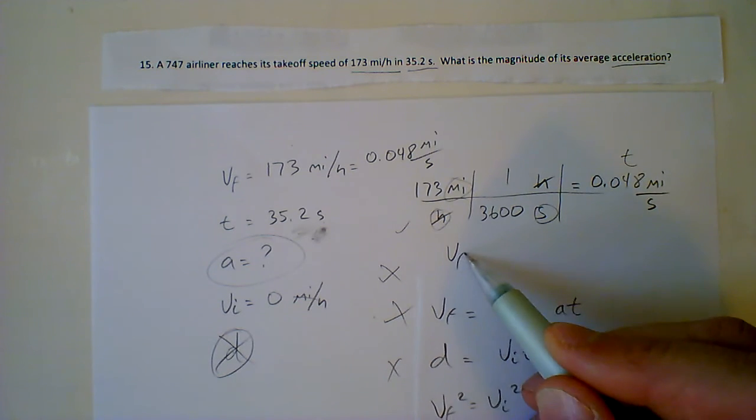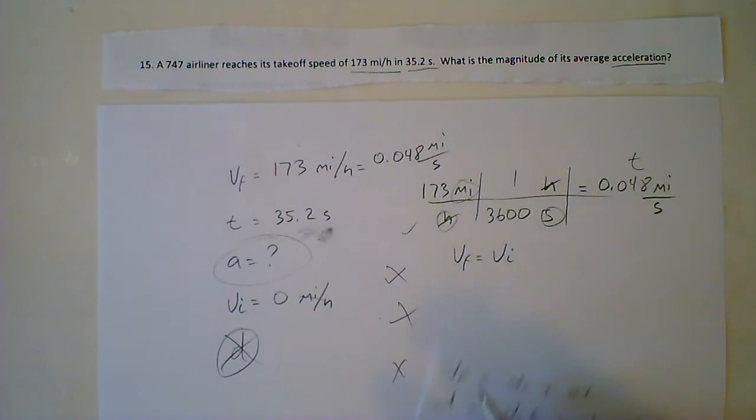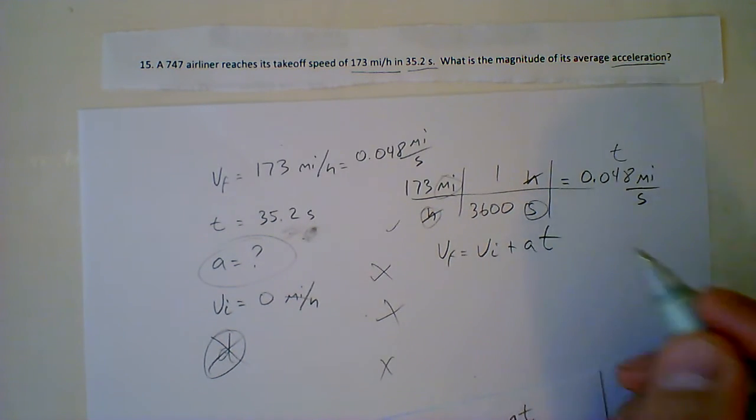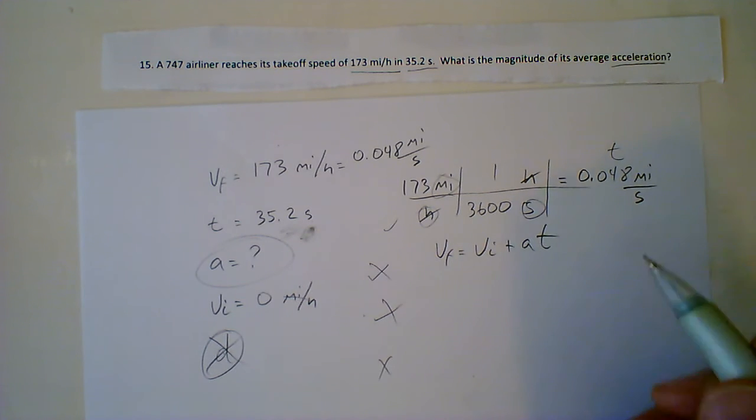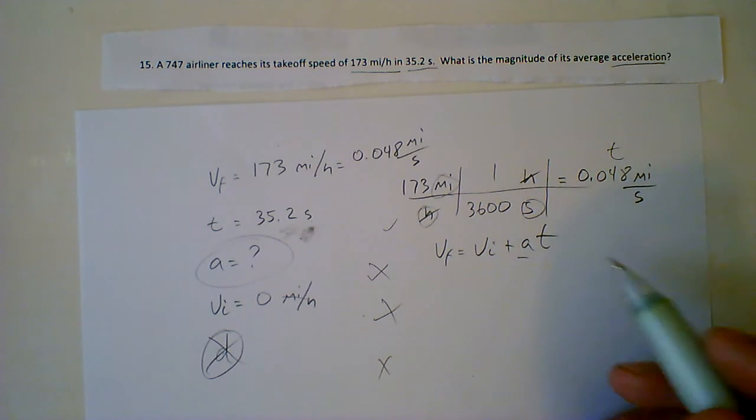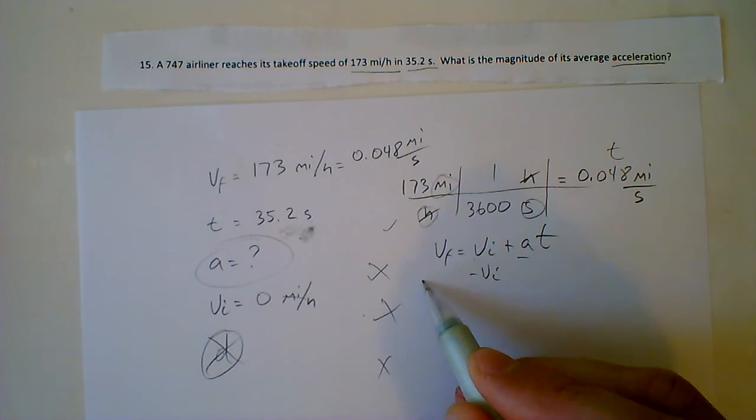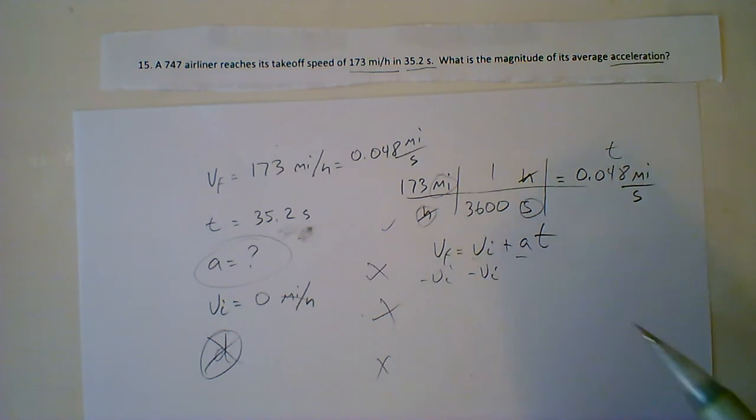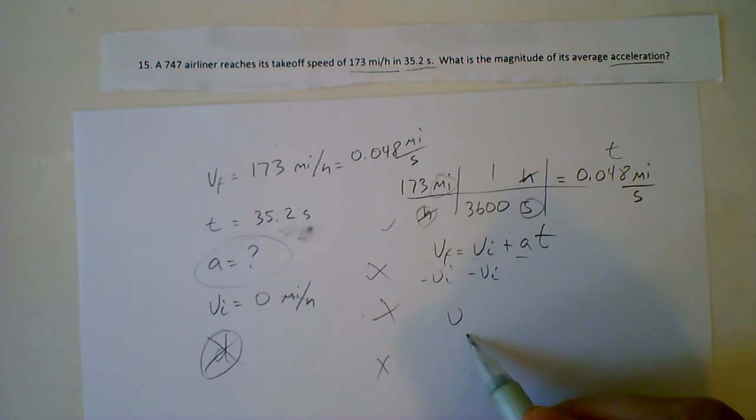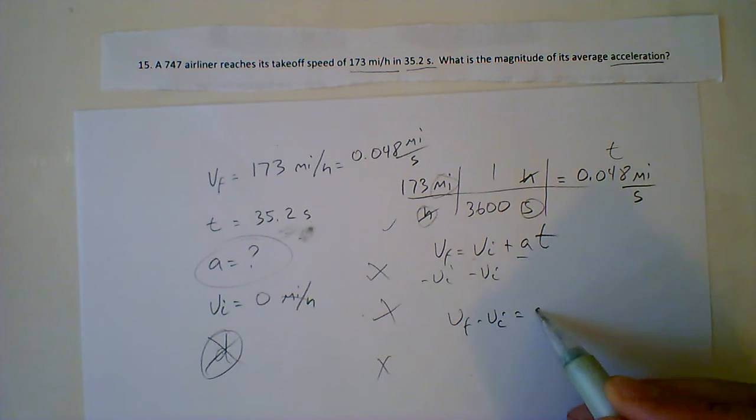I'm going to write that equation down. VF equals VI plus AT. And at this point in time, I'm going to have to rearrange it for A. So I'll go ahead and rearrange it for A. VI is over here. It's added, so I'm going to subtract it from both sides. And that ends up being VF minus VI equals AT.